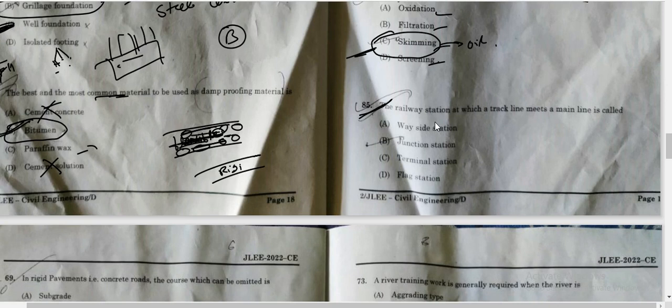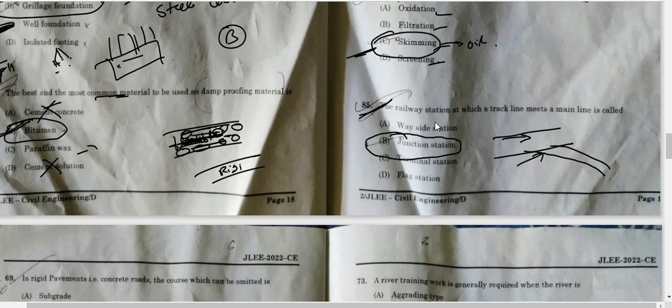Question number 85, the last question of this part: the railway station where a branch line meets with main line. Options are wayside station, junction station, terminal station, and flag station. The correct answer is junction station. Junction is where crossing happens - the main line connects with a sub-line or baseline. Option B is the correct answer. In the comment section, you can write what is flag station and what is terminal station.